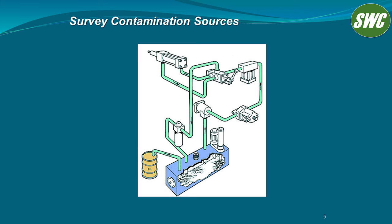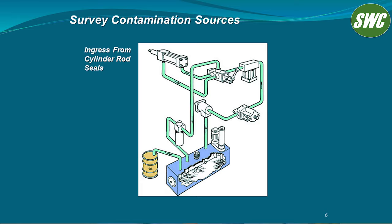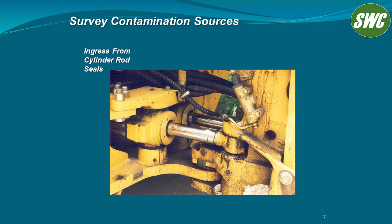To do such, let's consider contamination sources systemically. Cylinder rods provide ingression of dirt. You have a chrome-plated rod that you think is super smooth, but if you touch it, you'll see that there's a film of oil on it, and that oil draws contamination into the cylinder. That can be viewed on this piece of mobile equipment.